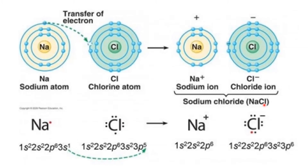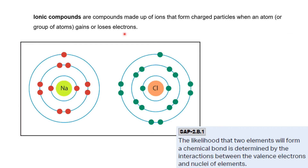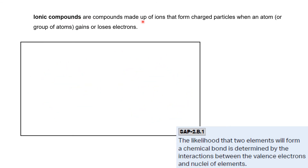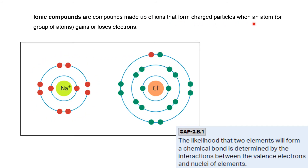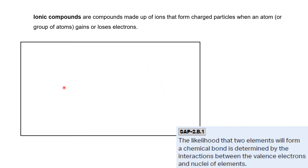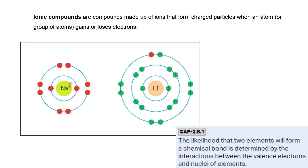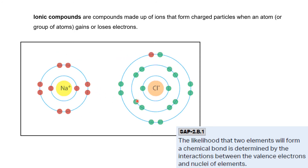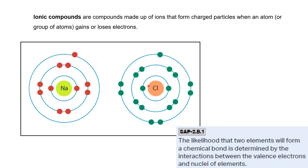Every atom wants to become stable, and that stability comes from having 8 electrons in its outermost shell. To achieve that configuration, atoms will either gain or lose electrons. Ionic compounds are compounds made up of ions — charged particles formed when an atom or group of atoms gains or loses electrons. These charged particles form ionic compounds by gaining or losing electrons.